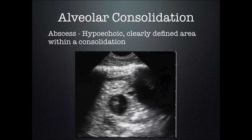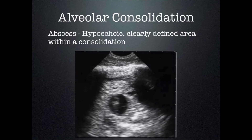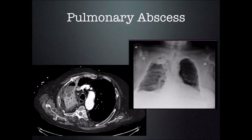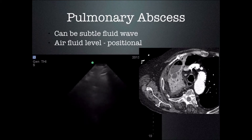Occasionally when looking at a consolidation you will see something within it — a hypoechoic area that does not match an anatomical structure would be very worrisome. In this case we're looking at an abscess, which is a hypoechoic clearly defined area within the consolidation. It doesn't match an artery or a vein, so you know it is not a normal structure — this is liquefaction of the lungs. We can see it on CT scan and chest X-ray as an air-fluid level, though not all abscesses will have an air-fluid level.